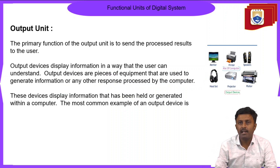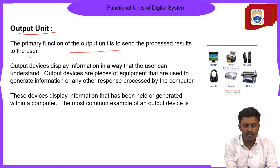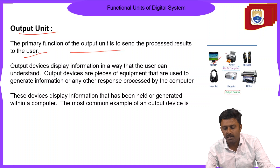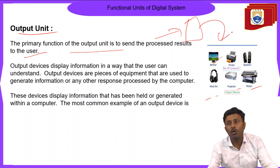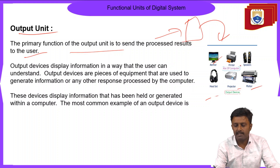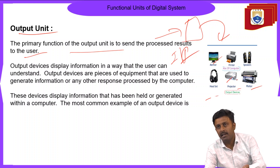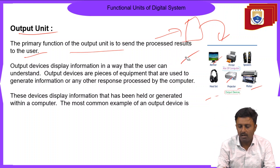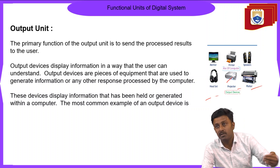The final unit is the output unit, whose primary function is to send processed results to the user. Examples of output devices include monitor, printer, speakers, headset, and projector. The computer processes the input and gives output to the output unit so the user can see the result — for example, a printer prints the processed output.